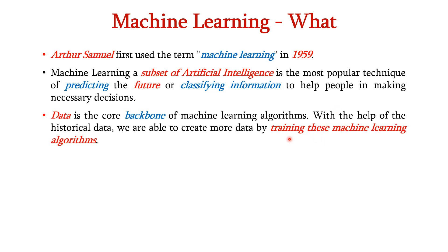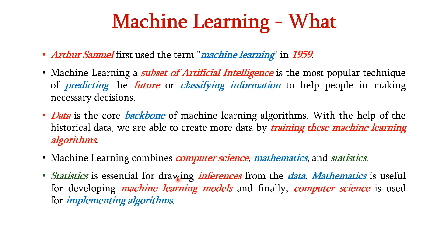Data is the core backbone of machine learning algorithms. With the help of historical data, we are able to create more data by training these machine learning algorithms. Machine learning combines computer science, mathematics and statistics. Statistics is essential for drawing inferences from the data. Mathematics is useful for developing machine learning models and computer science is used for implementing the algorithms.